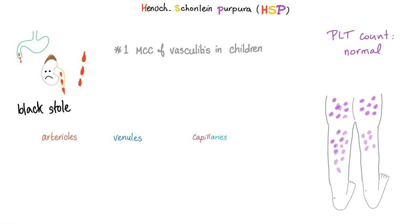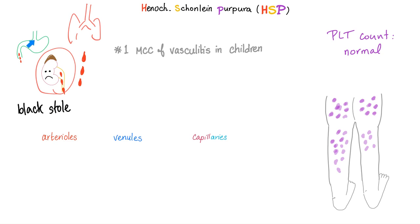Henoch-Schönlein Purpura will be the topic of the next video. But real quick: it's the most common cause of vasculitis in children. The problem is that first they get an upper respiratory infection, and then after the upper respiratory infection they develop something else — a problem in the kidney: IgA nephropathy and hematuria. And bleeding in the GI tract, which leads to black stool. This vasculitis is nasty because it affects arterioles, venules, and even capillaries.